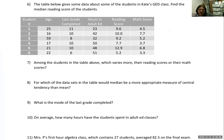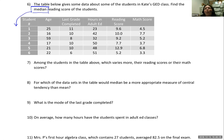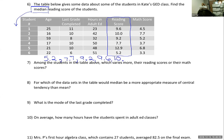The GED loves giving you data in charts and graphs. Number six: the table gives data about students in Kate's GED class. Find the median reading score. Remember, median is the centermost number in an ordered list — you must order the list first. Don't just go to the middle of an unordered list. So ordering the reading scores: 5.2, 7.7, 9.2, 9.6, 10.0, 12.9.